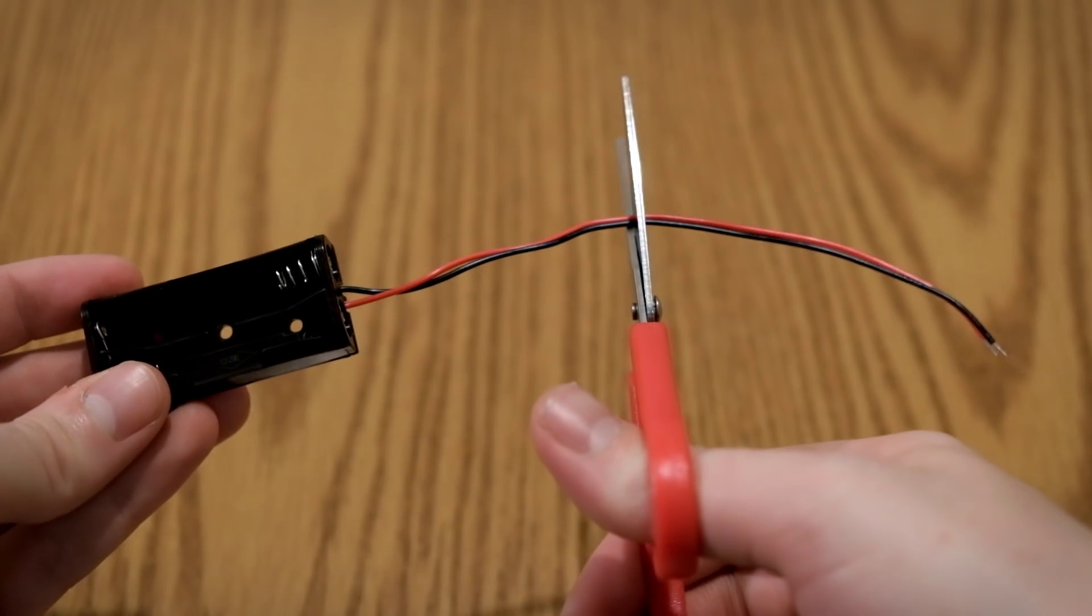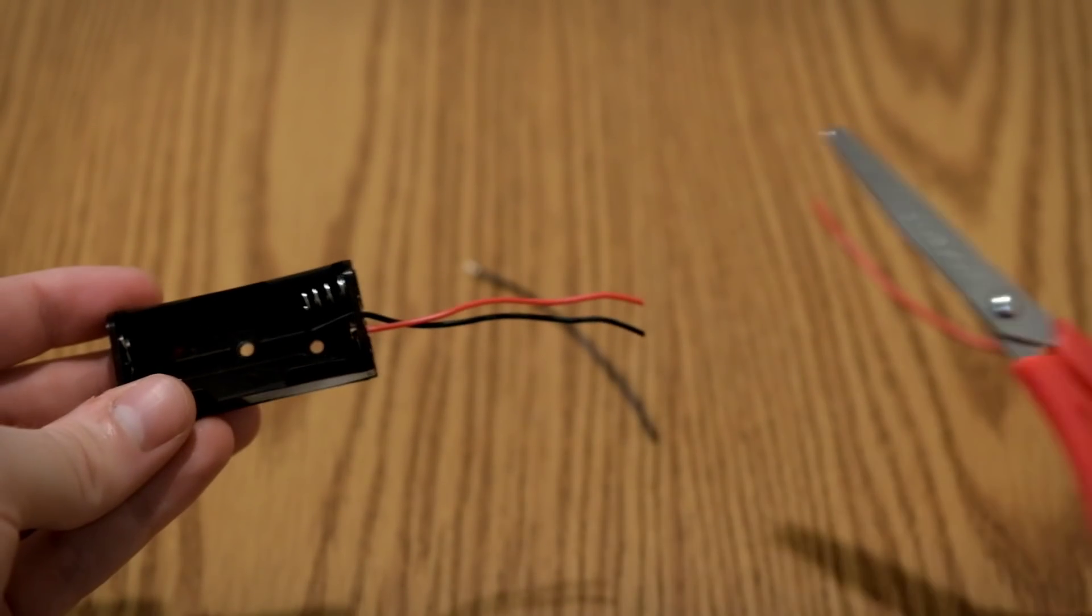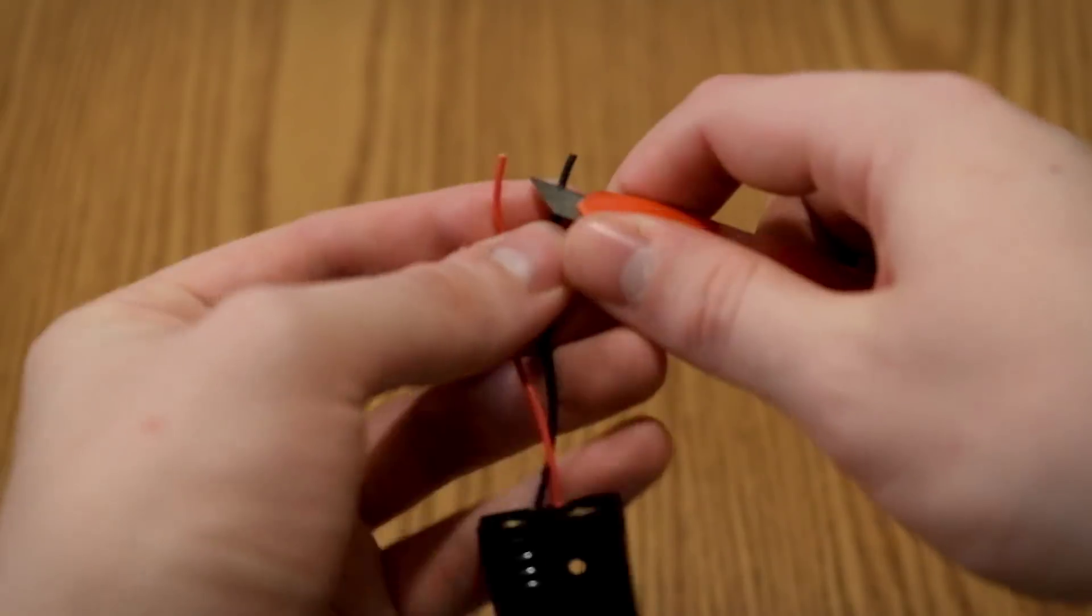Cut the wire from the battery holder in half and keep them because we'll need them for later. And strip the ends of the wire so we can make a better connection.